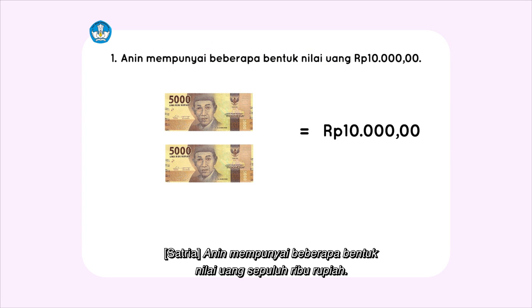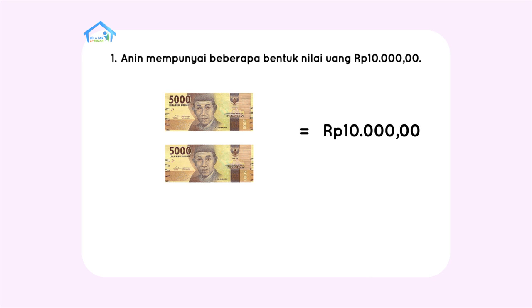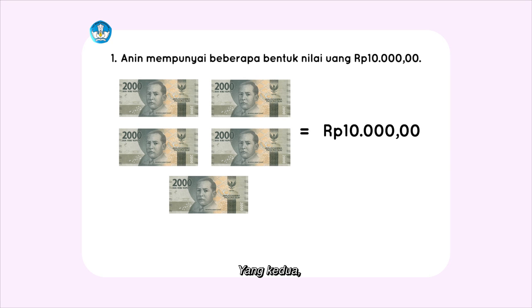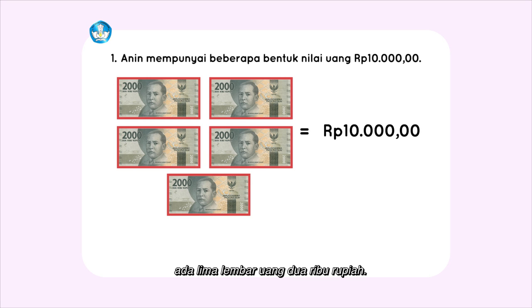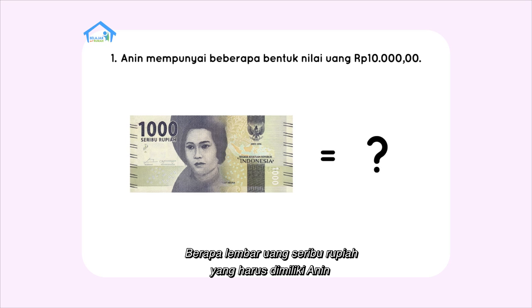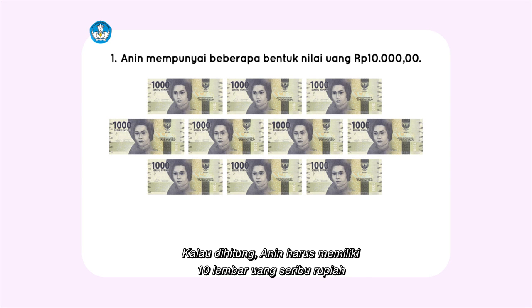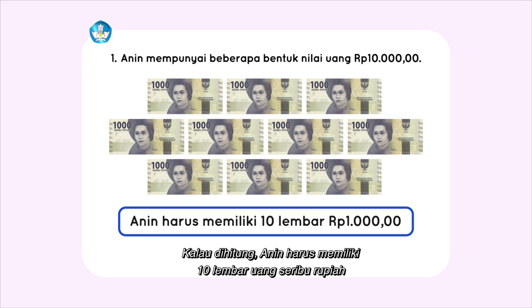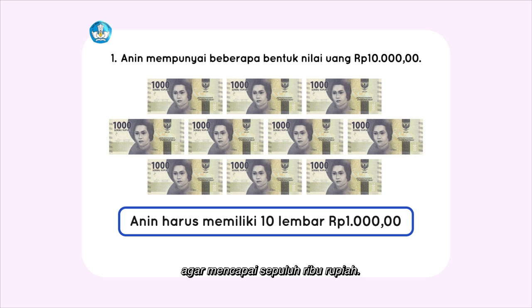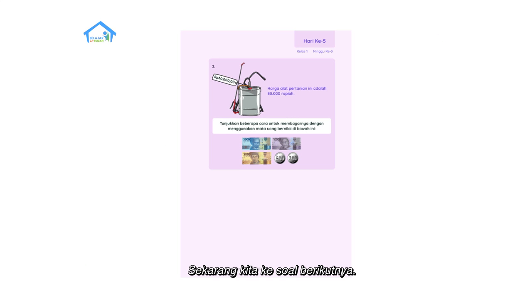Anin mempunyai beberapa bentuk nilai uang Rp10.000. Yang pertama, ada 2 lembar uang Rp5.000. Yang kedua, ada 5 lembar uang Rp2.000. Berapa lembar uang Rp1.000 yang harus dimiliki Anin untuk mencapai Rp10.000? Kalau dihitung, Anin harus memiliki 10 lembar uang Rp1.000 agar mencapai Rp10.000. Sekarang, kita ke soal berikutnya.